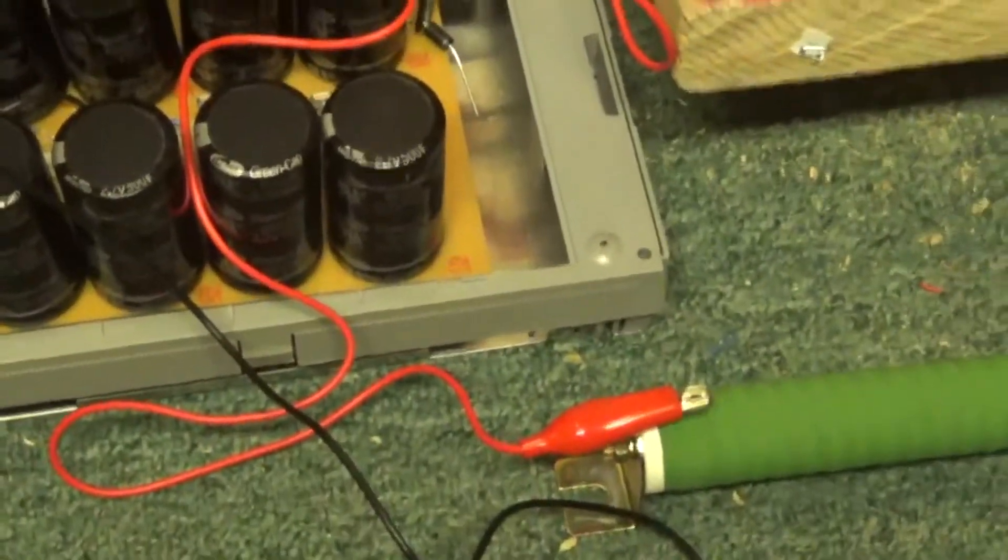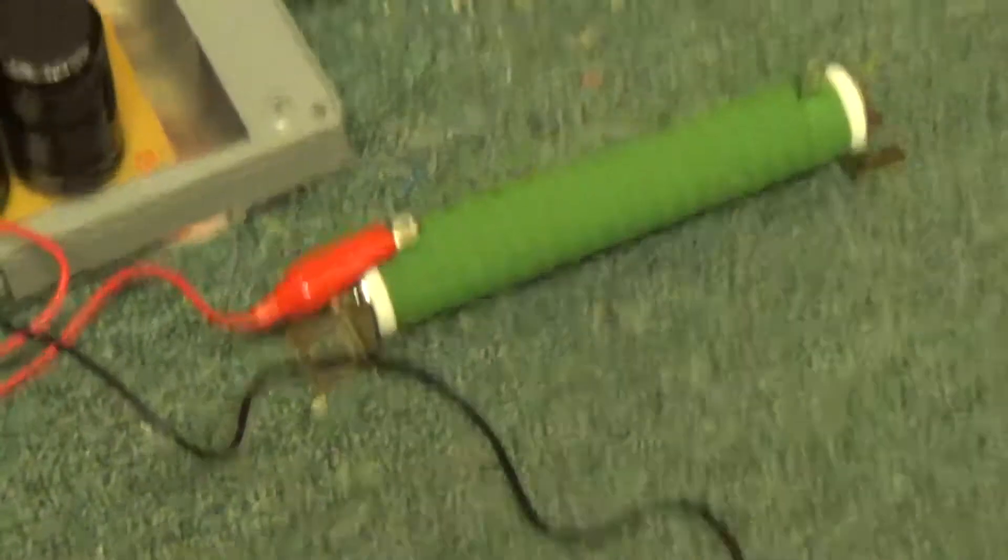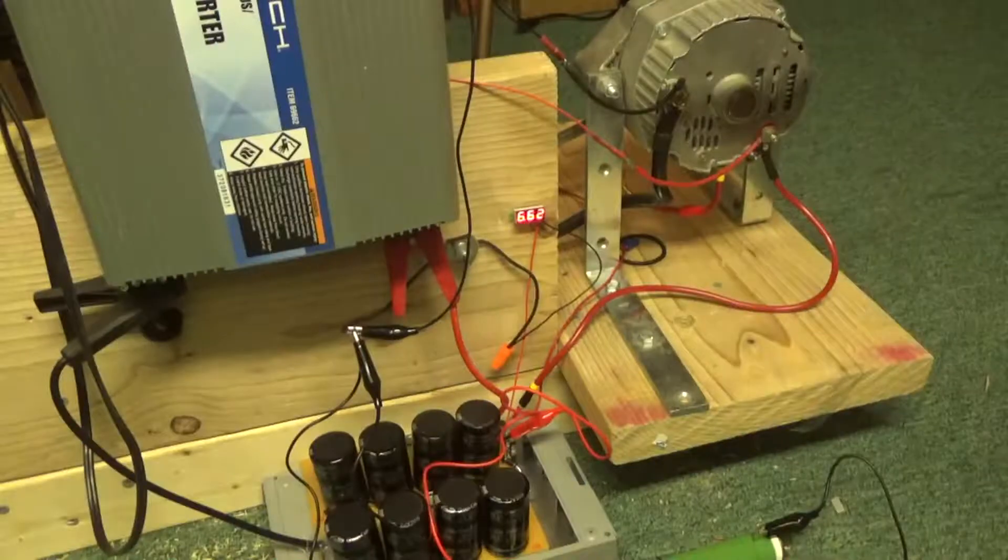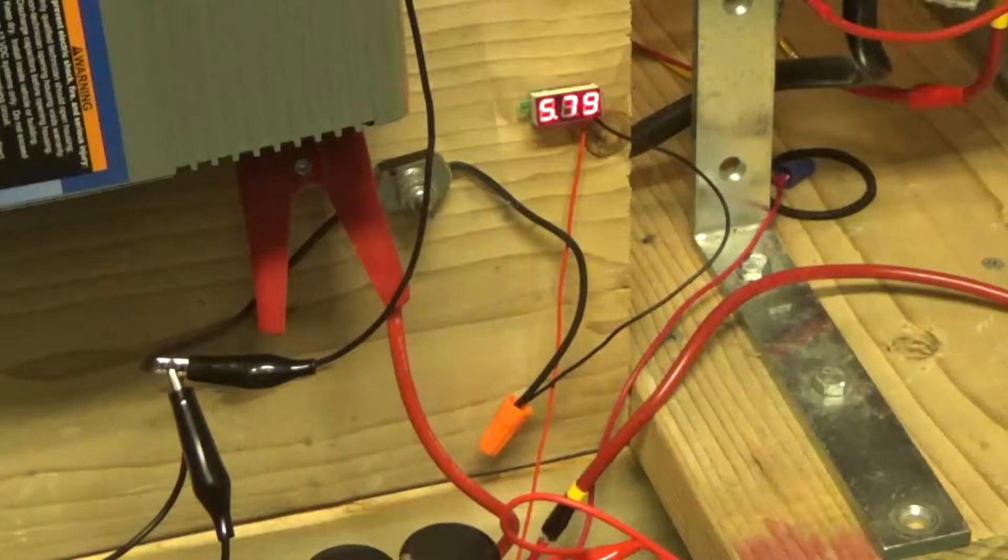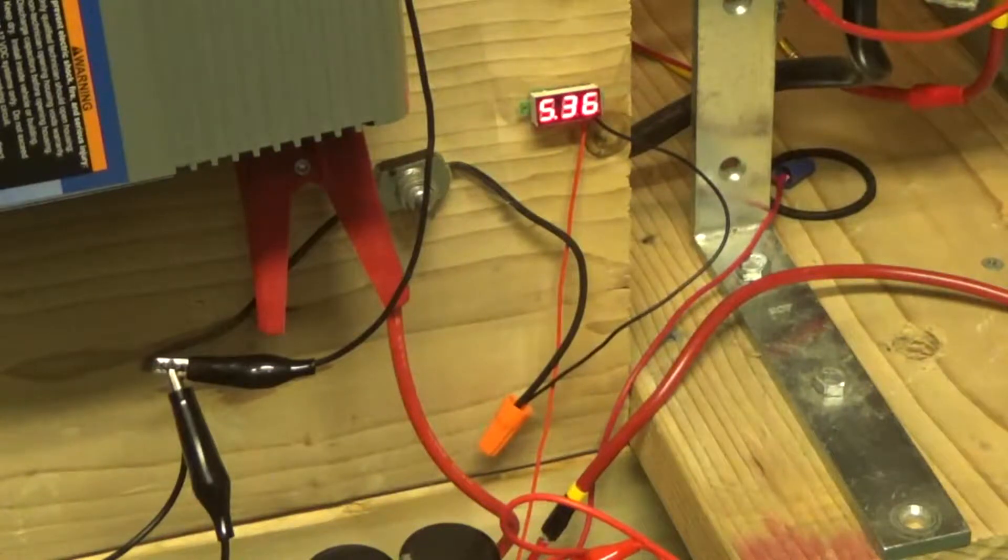So I'm going to drain this super capacitor with this giant 120 watt resistor here real fast. That's going to drop it right down. So I'm going to deliberately go below five volts to show you how I kick start this alternator.